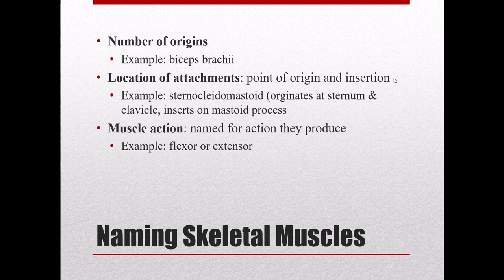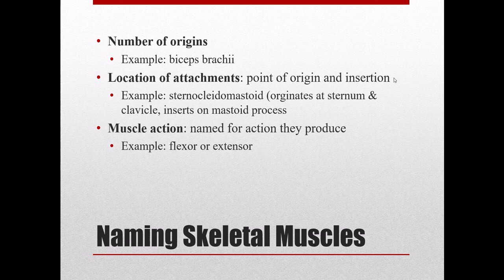Some muscle names actually tell you what the origins and insertions are. The sternocleidomastoid originates at the sternum and clavicle and inserts on the mastoid process — and it says all that in its name: sterno for sternum, cleido for clavicle, mastoid for the mastoid process. By knowing origins and insertions, you can figure out what the muscle is going to move — in this case, the head. Very often a muscle's name also tells you what it does: flexor muscles cause flexion, extensor muscles cause extension, pronator muscles cause pronation, adductor muscles cause adduction, and so on.